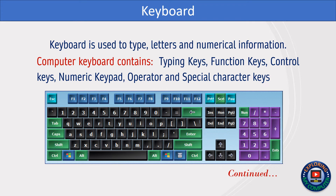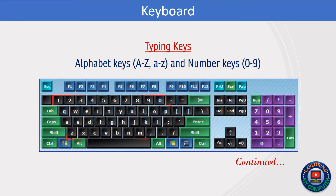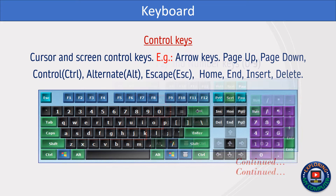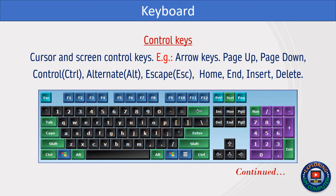A keyboard is used to type letters and numerical information. A computer keyboard contains typing keys, function keys, control keys, numeric keypad, and operator and special character keys. Typing keys include alphabet keys and number keys. Control keys are cursor and screen control keys, for example arrow keys.